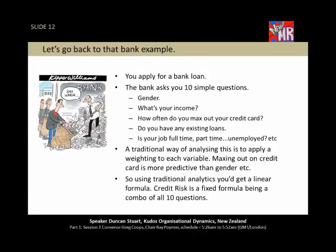Going back to that bank example, the bank is asking you 10 simple questions — things like gender, income, how often do you max out on your credit card, do you have existing loans, is your job full-time, part-time, or unemployed. A traditional way of analysing this was to apply a weighting to each variable — males are X, safer than females, so we crank up a score; high income gets 50 bonus points — and work out a fairly mechanical algorithm. Traditional analytics give you a very linear formula. Credit risk becomes a fixed formula, a combo of all 10 questions. You factor in this, multiply by that, divide by Y, and you apply that very fixed formula to absolutely everyone.